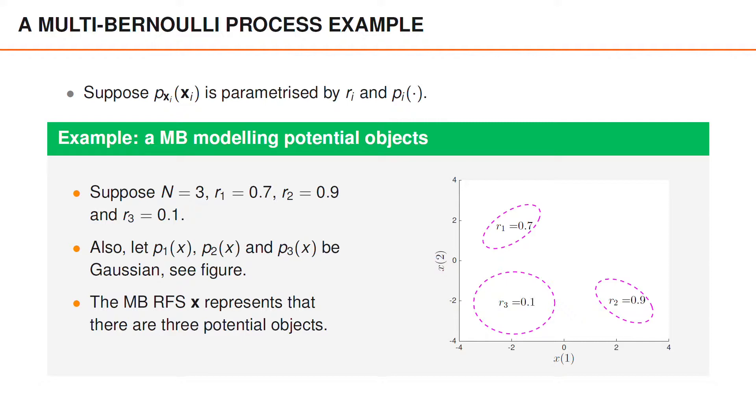You can then imagine that x represents three potential objects. Since r2 is 0.9, we are almost certain that there is an object around (2, -2). With 70% probability there is another object around (-2, 2). Finally, there is a 10% probability that there is an object around (-2, -2).